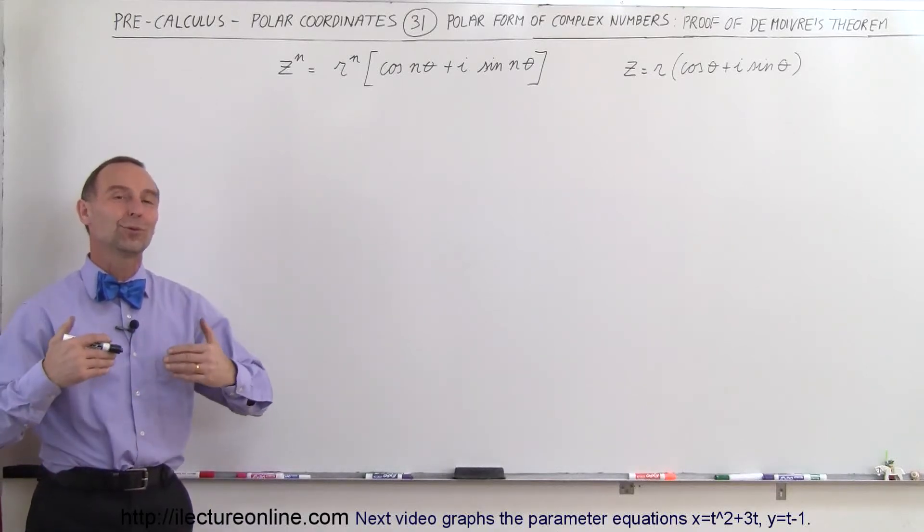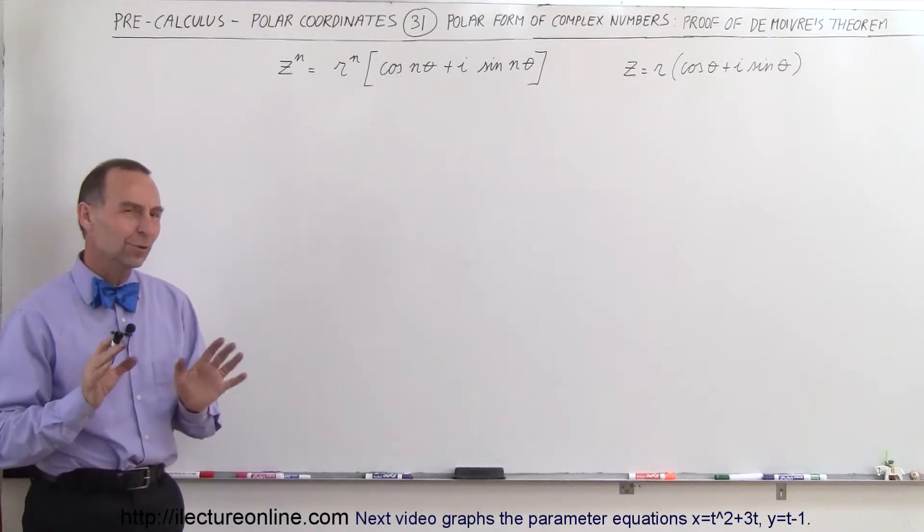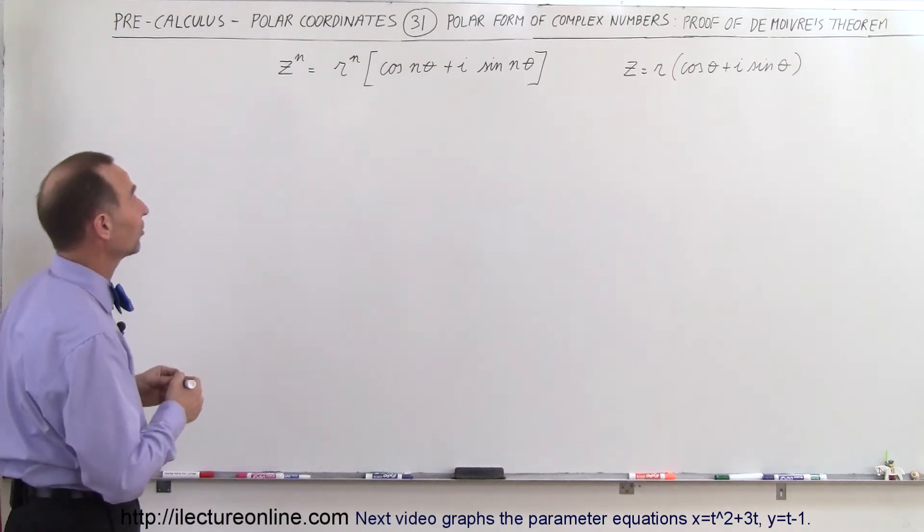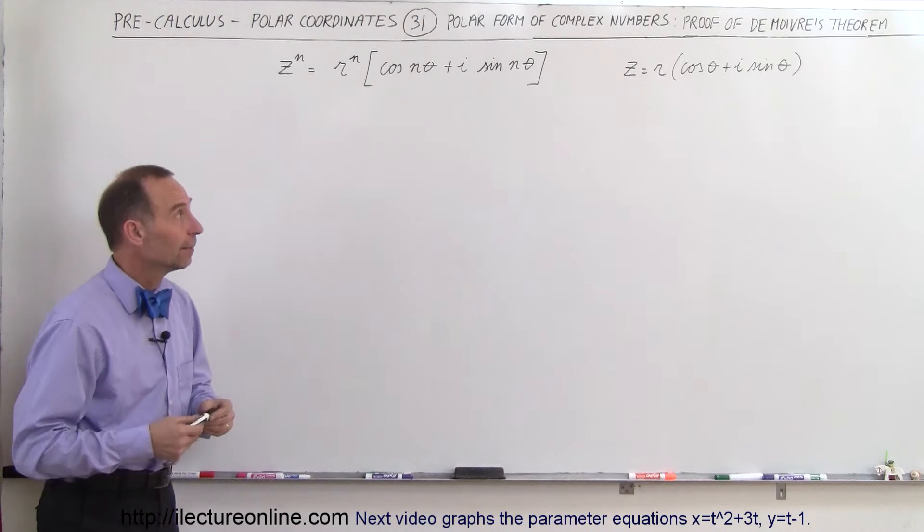Welcome to ElectronLine. Now we're going to prove de Moivre's theorem. We're going to do it in a similar fashion to how we proved the multiplication theorem of complex numbers in polar form.